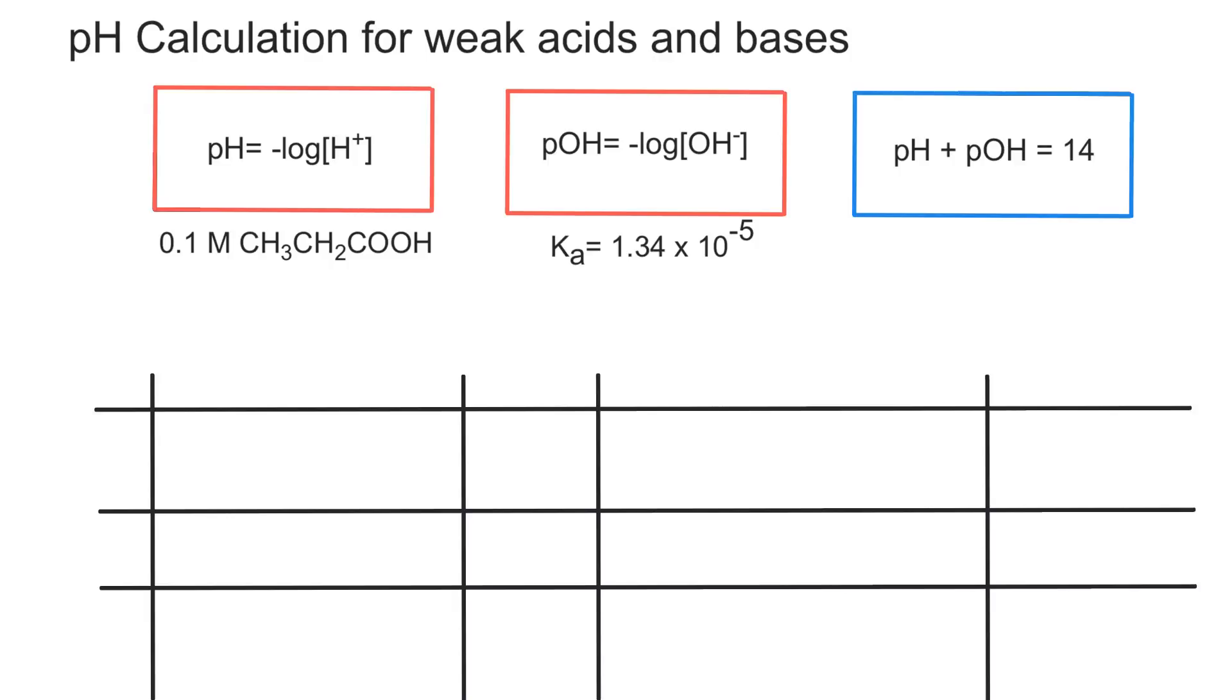So to walk you through the procedure I'm going to use propanoic acid as an example. So that would be CH3CH2COOH. And that has a Ka value of 1.34 times 10 to the negative 5. Let's state it here.